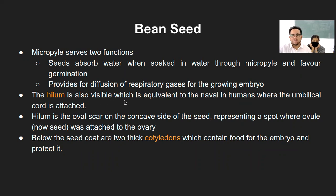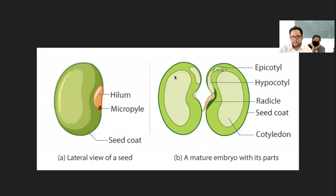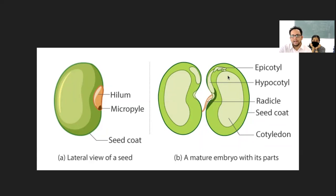It is also equivalent to the navel in humans — every human being has a navel point which is the attachment point of the umbilical cord through the mother's uterus. Below the seed coat there are two thick cotyledons which contain food for the embryo. The cotyledons are shown in light green color here; they are nutrient-rich and going to provide nutrition to the embryo. The embryo is the part of the seed which is going to grow into a new plant.